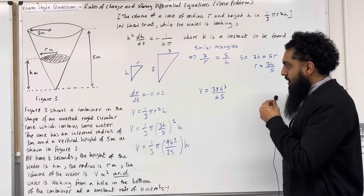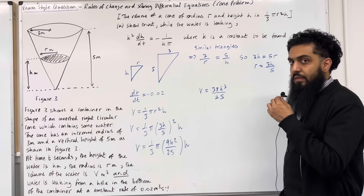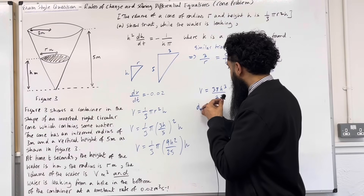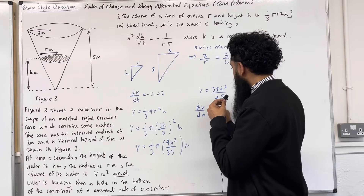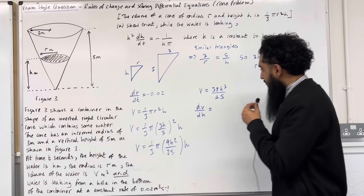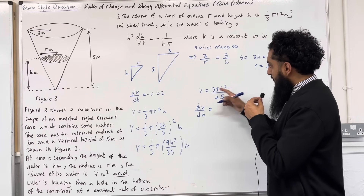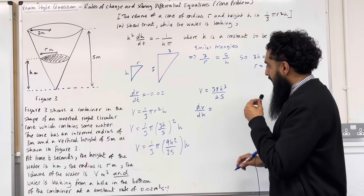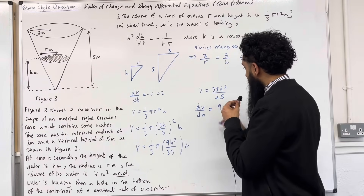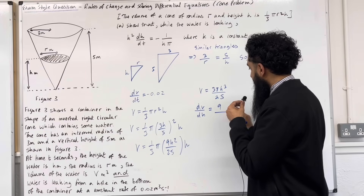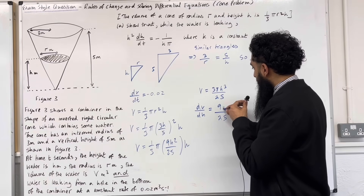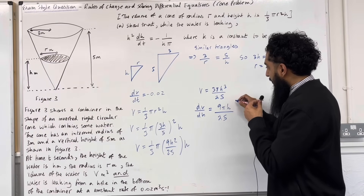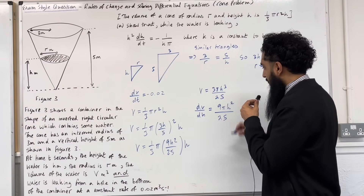Now I work out dV/dh. Differentiating V = 3πh³/25 with respect to h: bring down the power 3, multiply 3 × 3/25 = 9/25, giving dV/dh = 9π h² over 25.